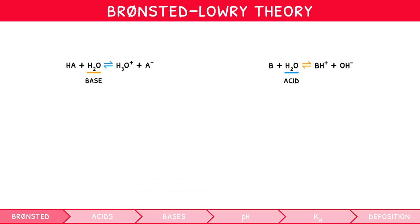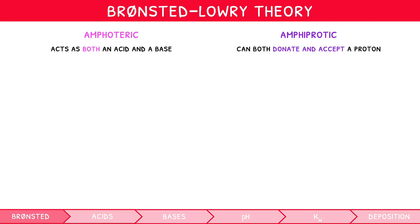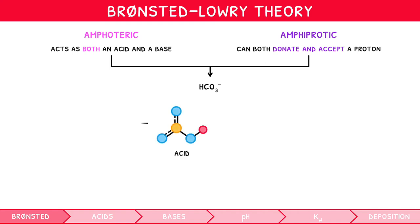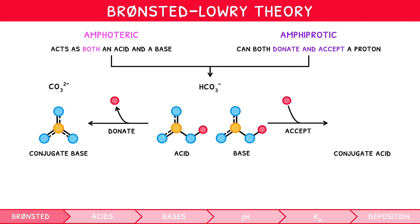Therefore, we can see that water is acting as both an acid and a base across these examples. The term for a species which can act as both an acid and a base is amphoteric. A similar term is amphiprotic — a species which can either donate or accept a proton — which also describes water in this context. A common example of an amphoteric and amphiprotic substance is HCO3-. This can act as an acid, donating a proton and dissociating to form the conjugate base CO3-. However, it can also act as a conjugate base, accepting a proton to form the acid H2CO3.